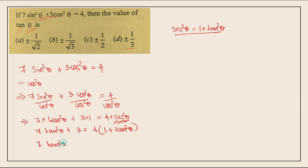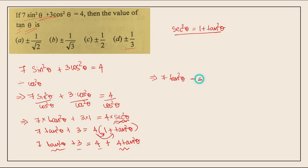Opening the bracket: 7tan²θ plus 3 equals 4 plus 4tan²θ. Rearranging: 7tan²θ minus 4tan²θ equals 4 minus 3. That gives 3tan²θ equals 1. Therefore tan²θ equals 1 by 3.